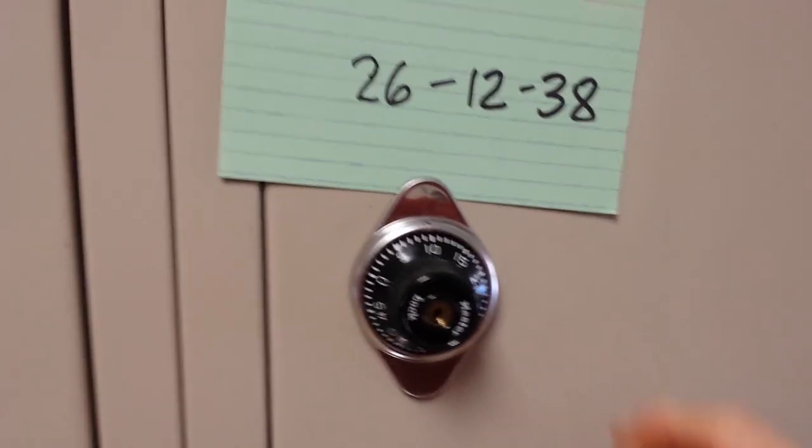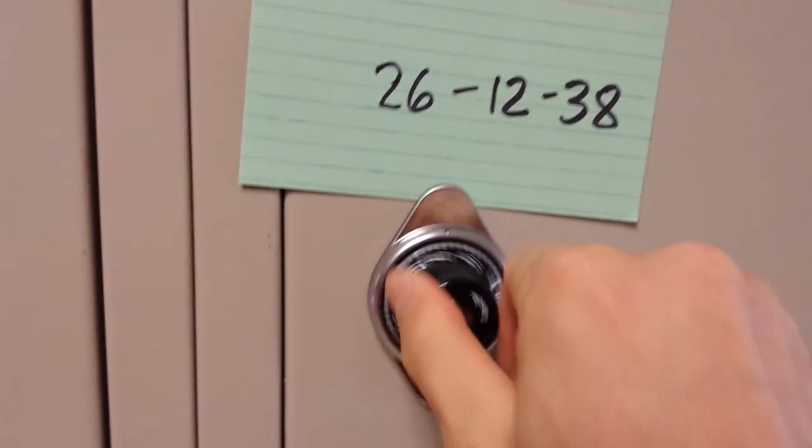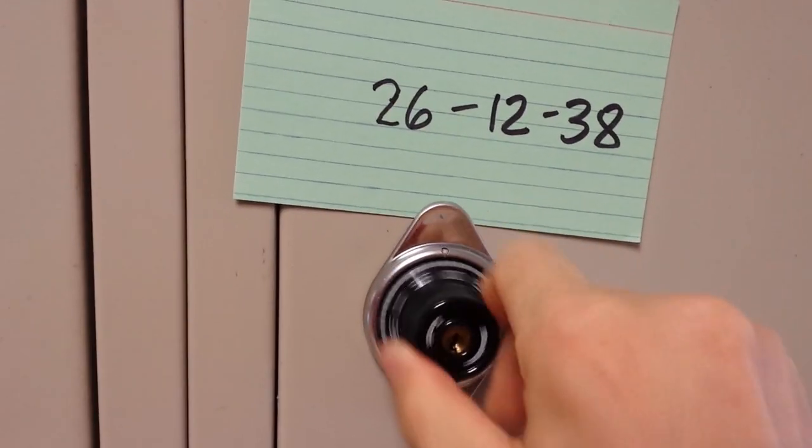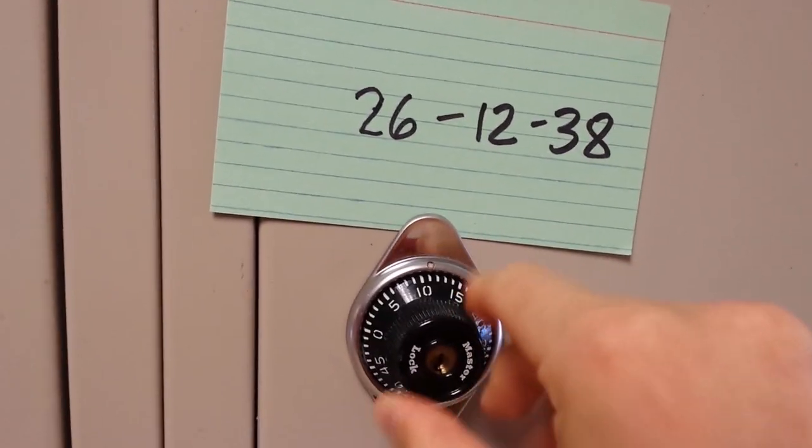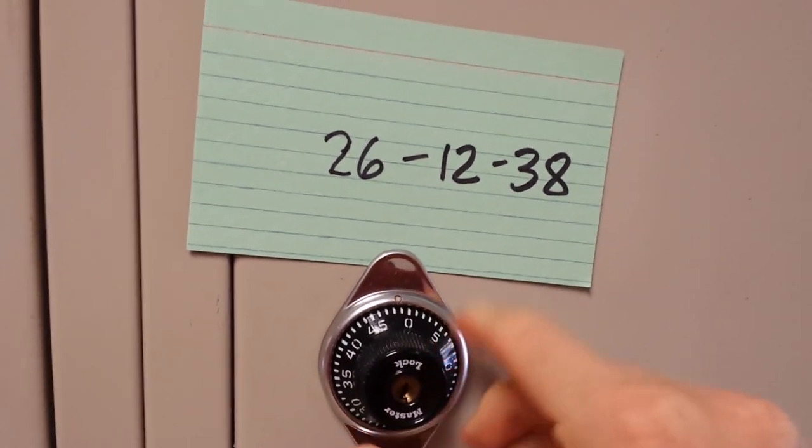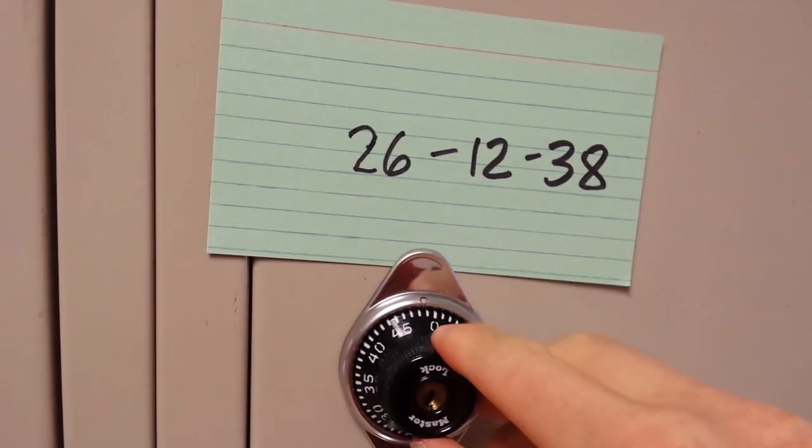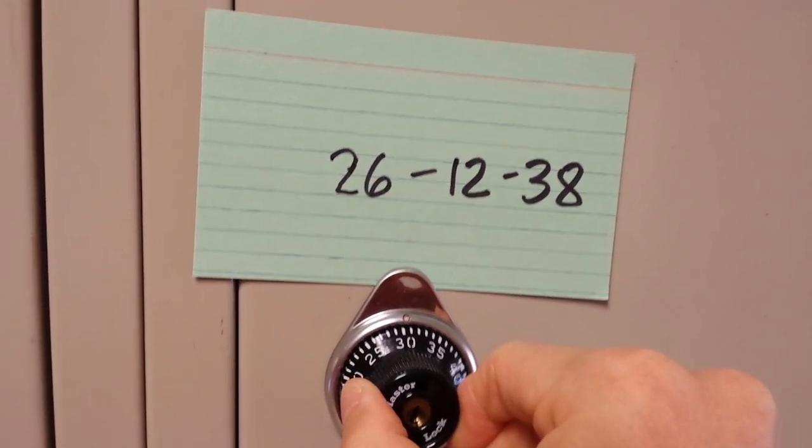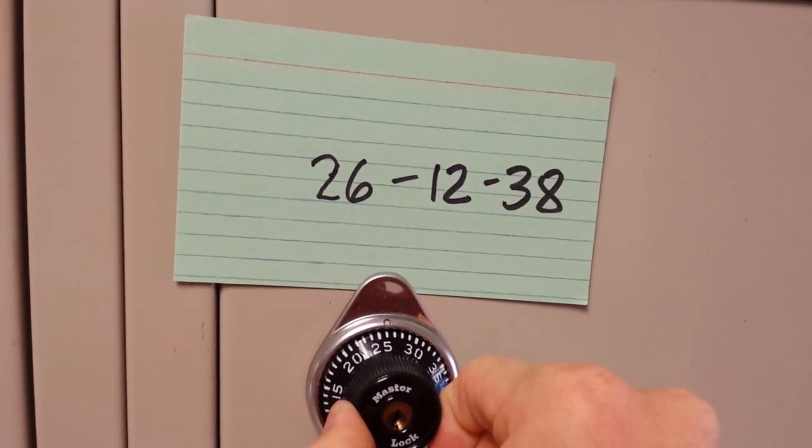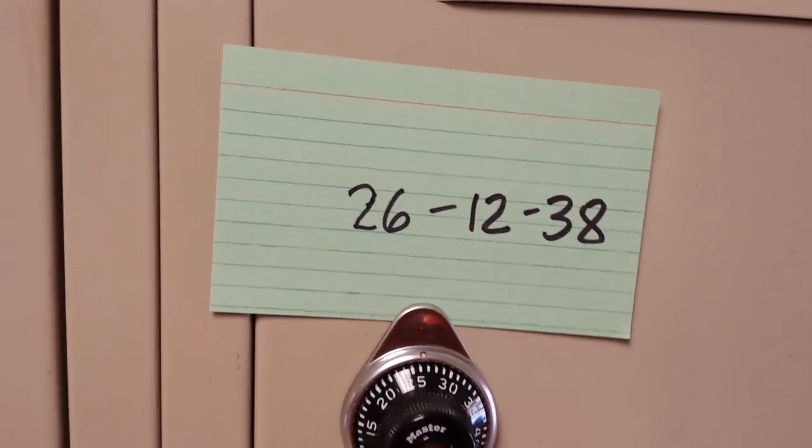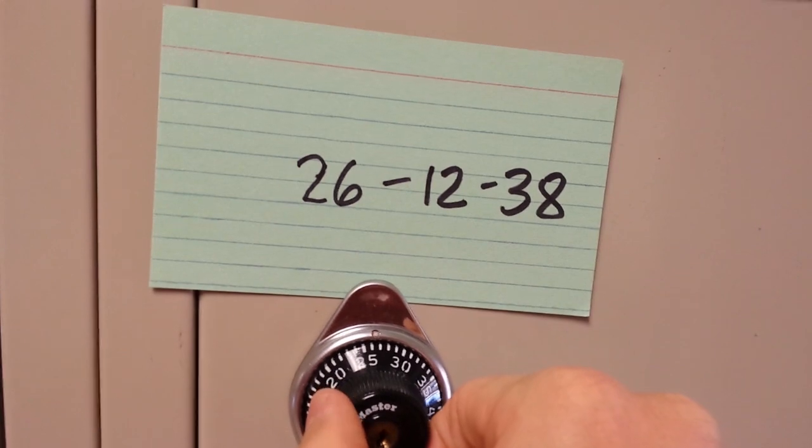First thing you do is you're going to turn it to the right many times just to clear it. So go like that and then you slow down looking for the first number. First number is 26, so I'm going to turn it to the right, continue turning it to the right until I get to 26. And then once I get to 26, I'm going to turn it the other direction.